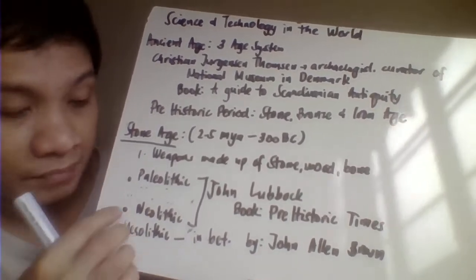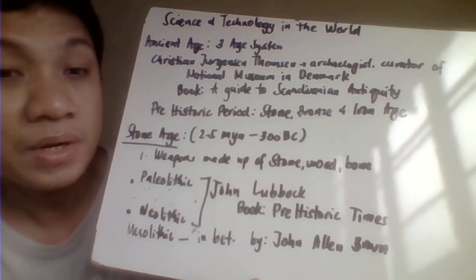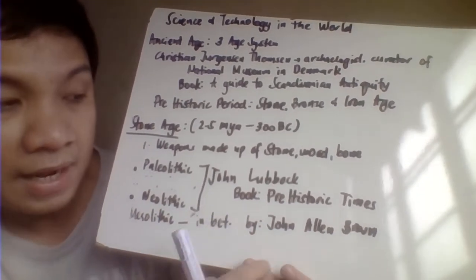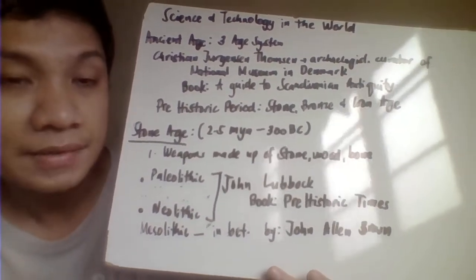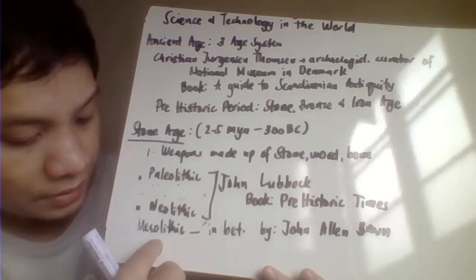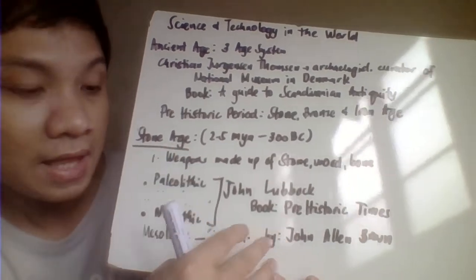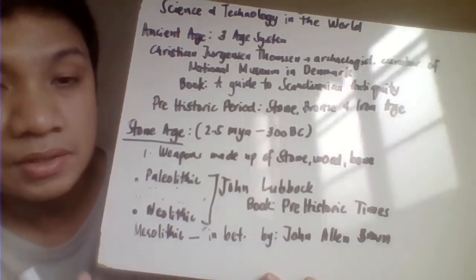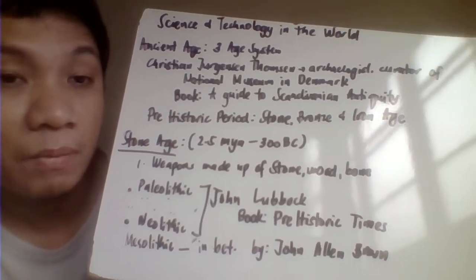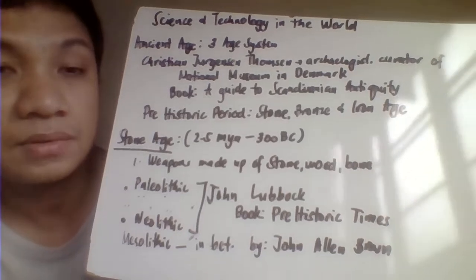The Stone Age is divided into three areas. John Lubbock divided it into the Paleolithic and Neolithic periods, and John Island Brown proposed a transition period between them called the Mesolithic stage. The Stone Age is characterized by civilizations using stone as their main tool, along with non-metal materials like wood and bones for their livelihood.